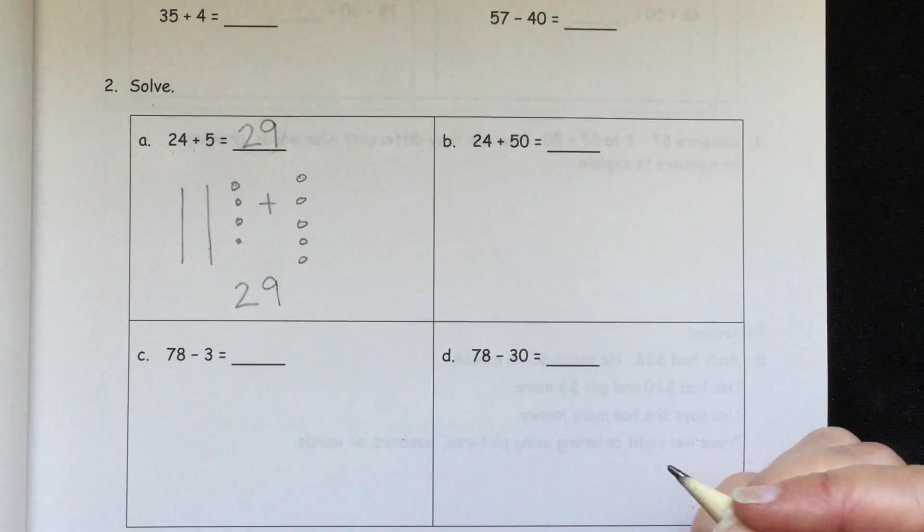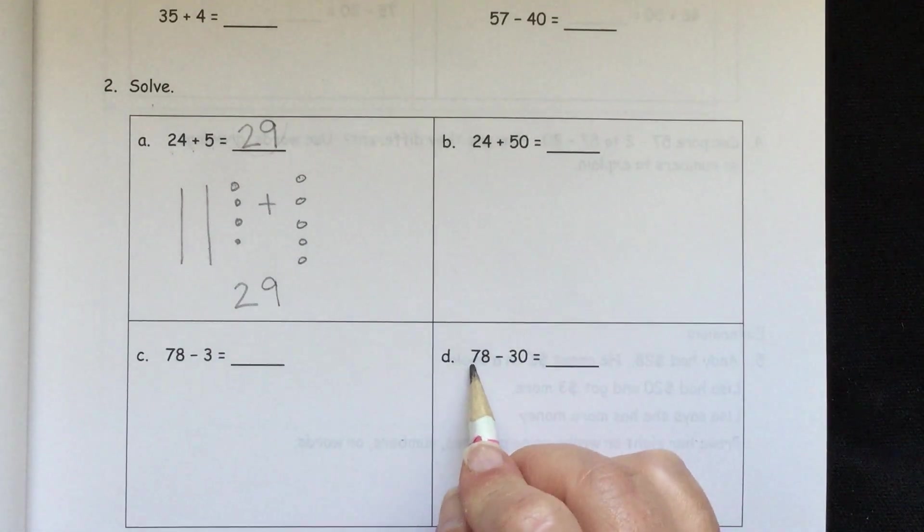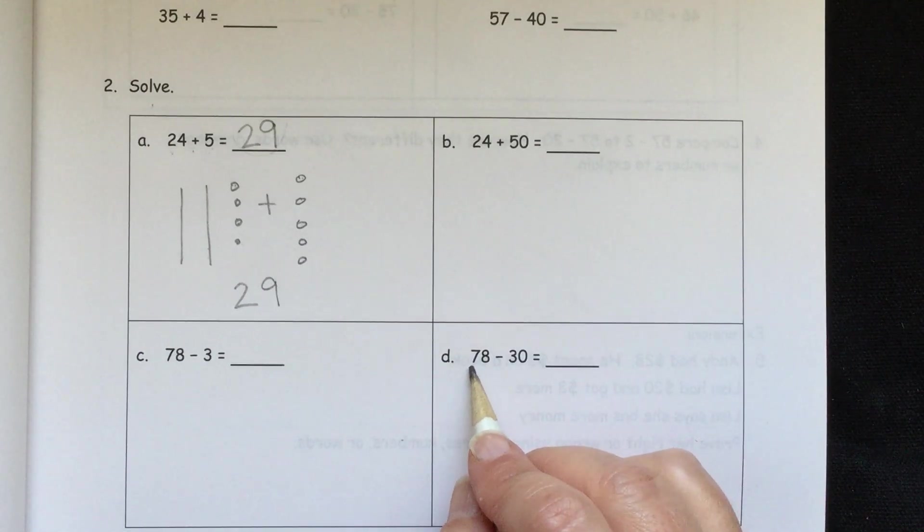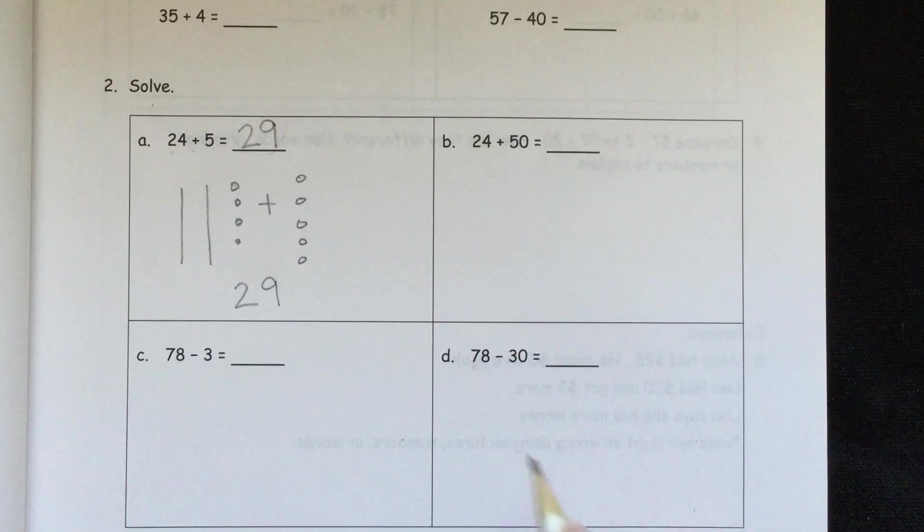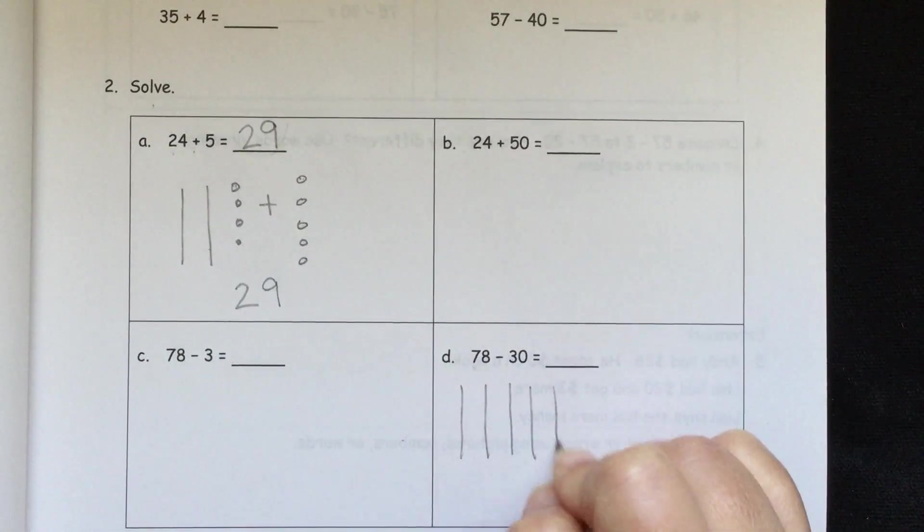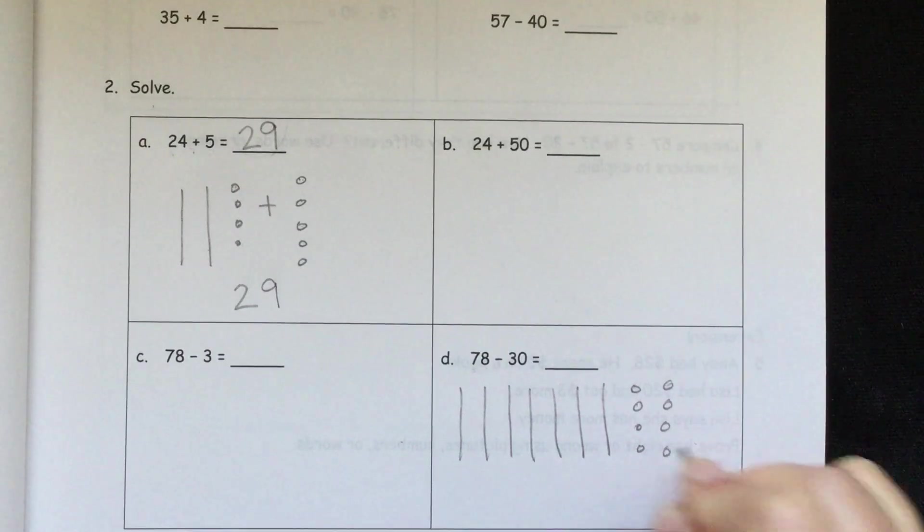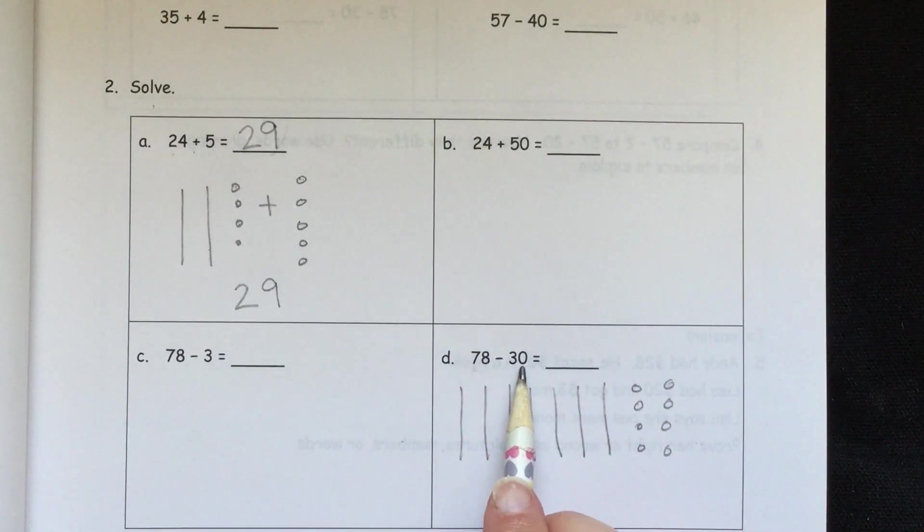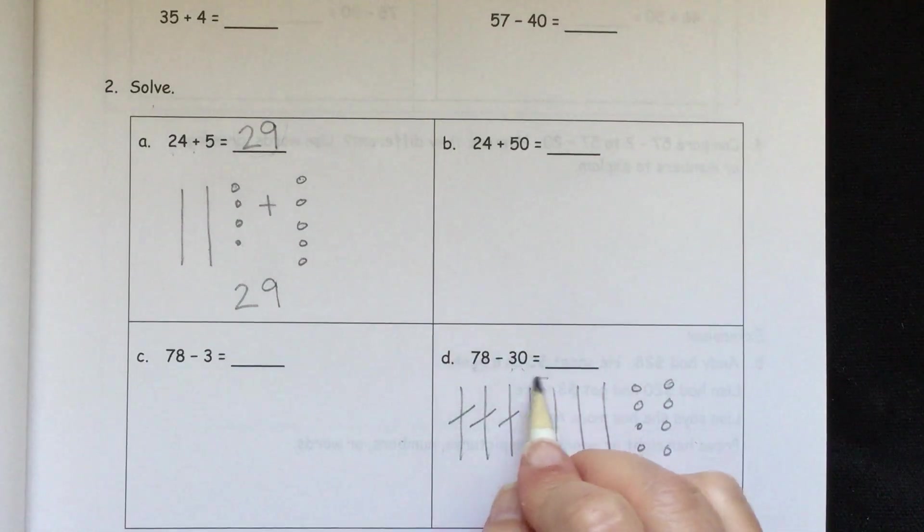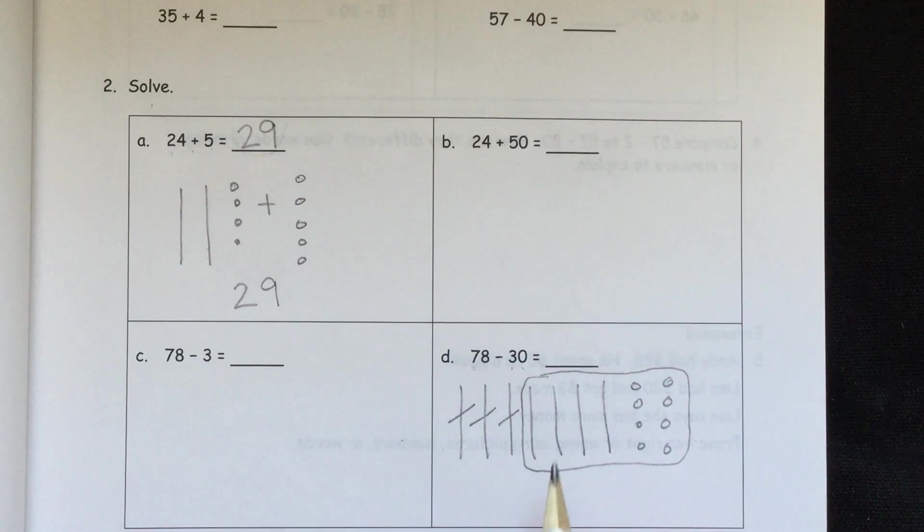Let's go with D. So if we're going to have 78 minus 30, and we're drawing our 10s and 1s, we start with 78. So with subtraction, you just need to draw out the biggest number. So 78, we have 7 10s. 1, 2, 3, 4, 5, 6, 7, and 8 1s. 1, 2, 3, 4, 5, 6, 7, 8. We're taking away 30. Now that's 0 1s. So we're going to leave our 1s alone. And that's 3 10s. So we're just going to cross off 3 10s. 1, 2, 3. So what we have left here is what we need to count to find out what our answer is.